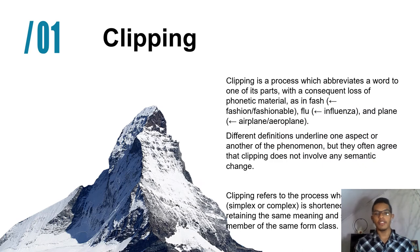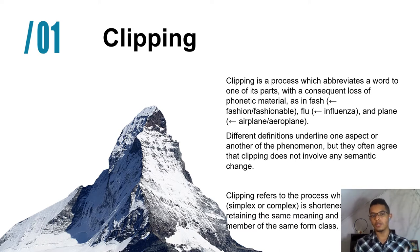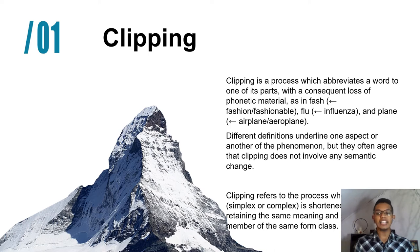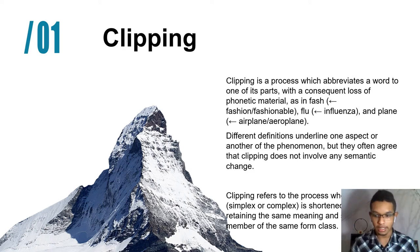Let's check. Number one, we have clipping. Sometimes abbreviations are formed by omitting one or more syllables from a word or a phrase. In this case, we call it clipping. Why? Because the beginning of the word is kept and the rest is clipped. And sometimes we keep the end of the word and clip the rest. Let's check some examples to understand this better.